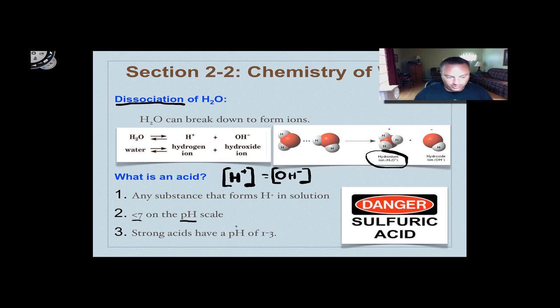Very strong acids have a pH of 1 to 3. In fact, stomach acid has a pH of 1 to 3, so it's very, very acidic.